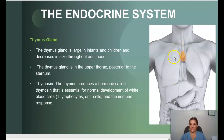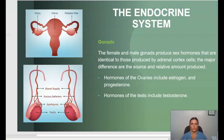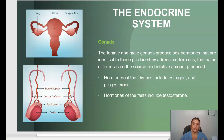The thymus gland is large in infants and children and decreases in size throughout adulthood. The thymus gland produces a hormone called thymosin that is essential for the normal development of white blood cells — the T lymphocytes or T cells — which we discussed in our immune lesson, helping with the immune response. The gonads produce sex hormones identical to those produced by the adrenal cortex. Hormones of the ovaries include estrogen and progesterone, and hormones of the testes include testosterone.